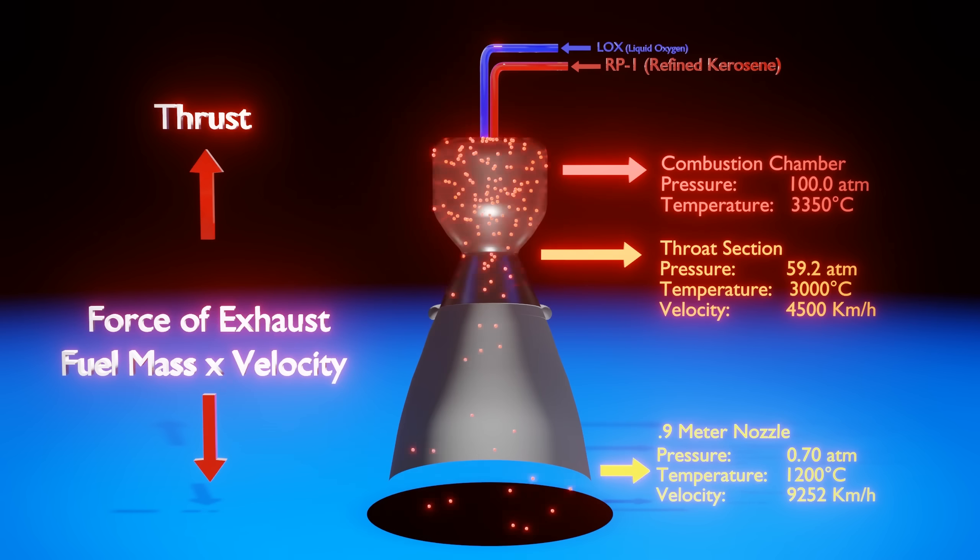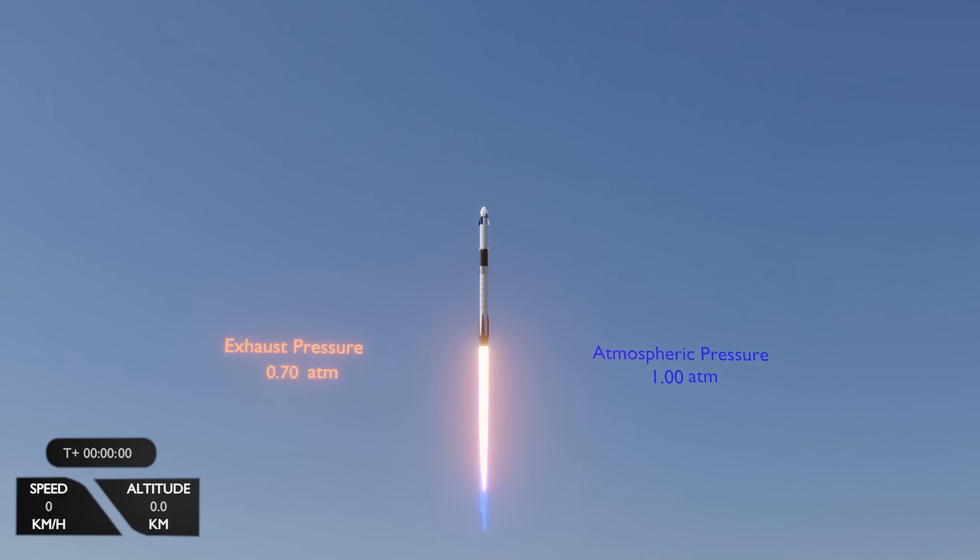Merlin engines, like the ones on the first stage of the Falcon 9, have a nozzle diameter of 0.9 meters. This results in an exhaust exiting the nozzle at over 9,000 kilometers an hour, and at a pressure of 0.7 atmospheres. The relationship between the exhaust pressure and atmospheric pressure around the rocket play an important role in the rocket's efficiency.